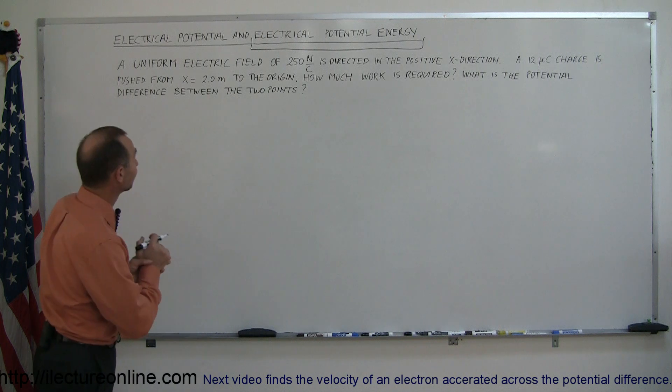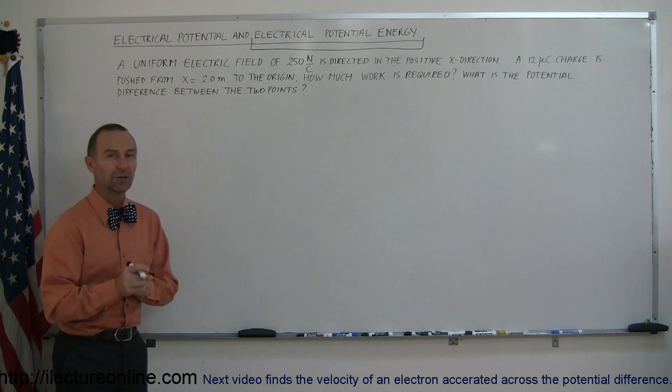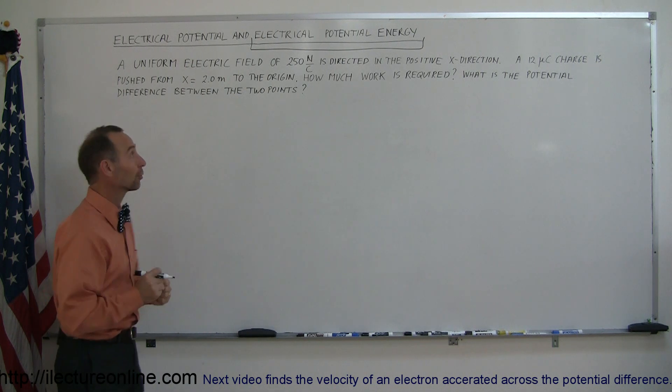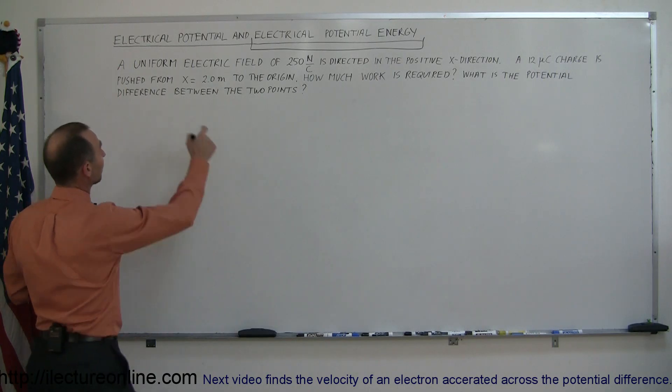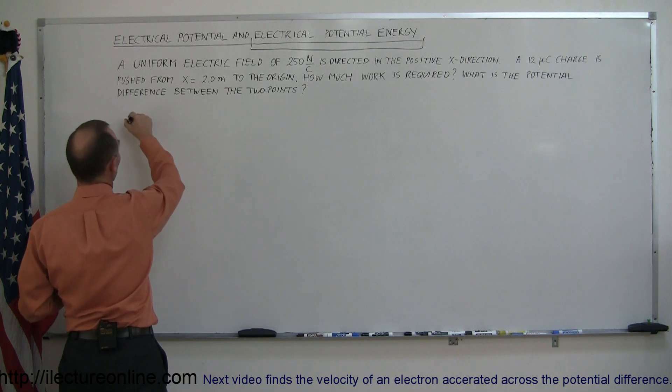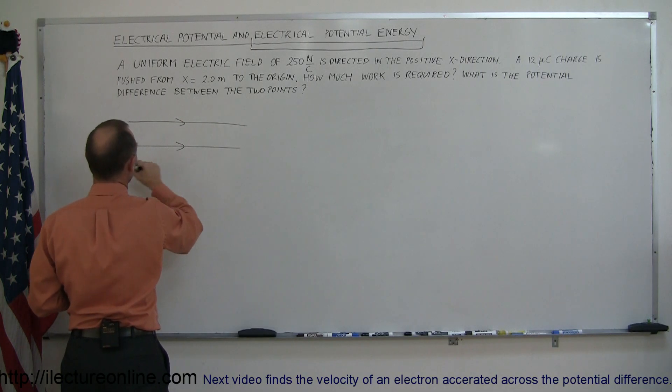Alright, where do we start? The first thing we always want to do is draw a nice little diagram to get a feel of what's really happening. So, how do we have a uniform electric field? It says that it's directed in the positive x direction. So let's indicate that by drawing some arrows in the positive x direction representing the electric field.